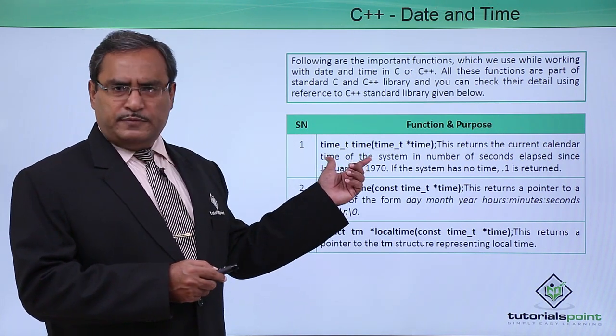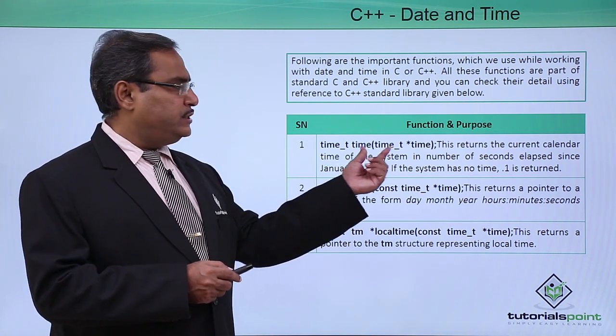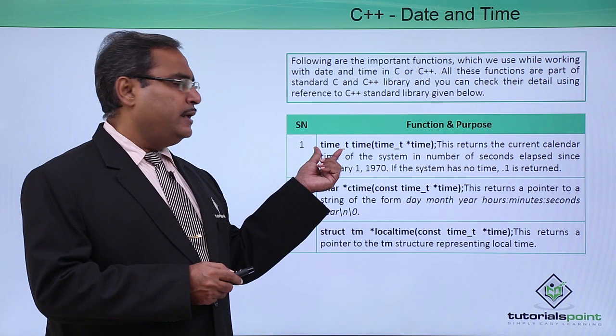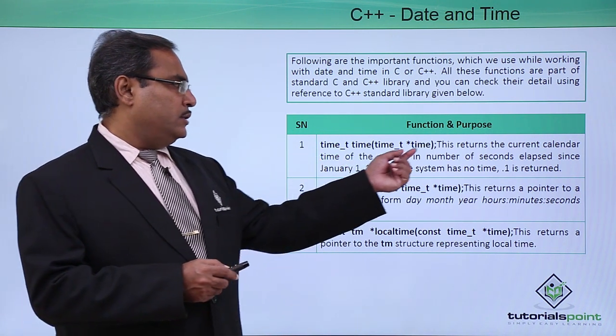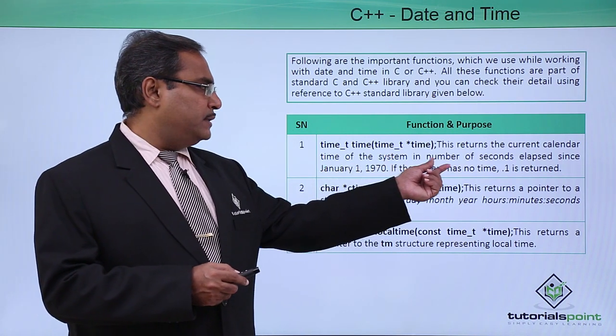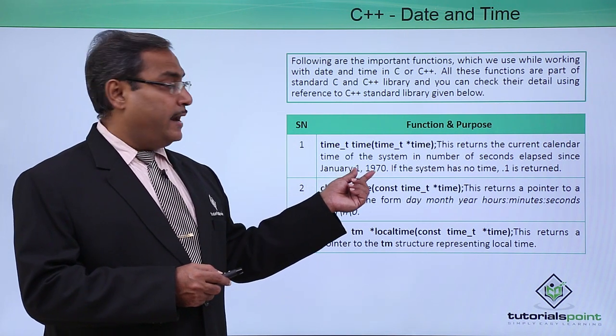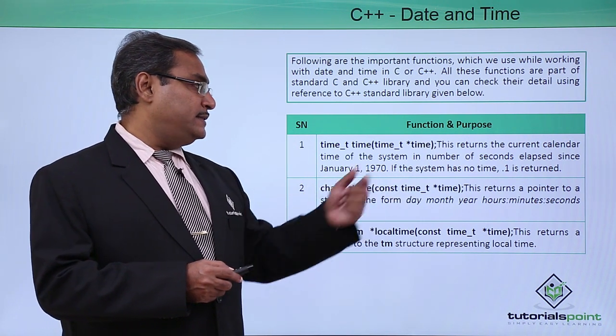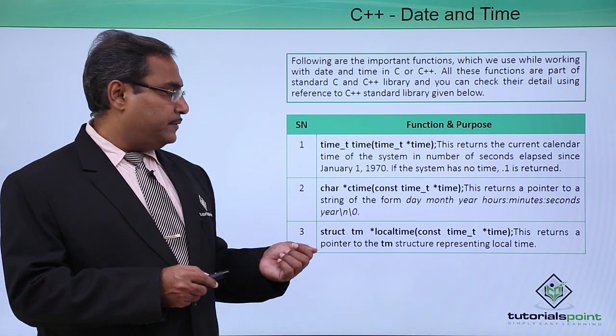I am just considering the first one, the name of the function is time which is taking this one as input argument and time_t will be the output argument type. This returns the current calendar time of the system in number of seconds elapsed since January 1st, 1970. If the system has no time, one is returned against that.